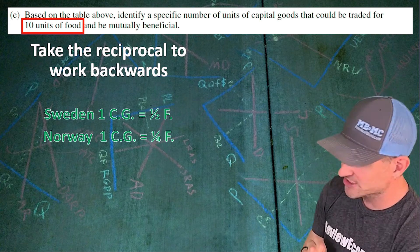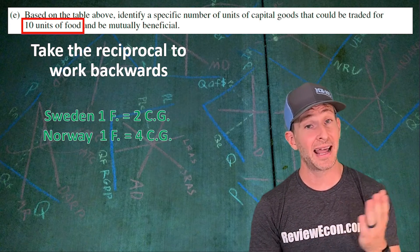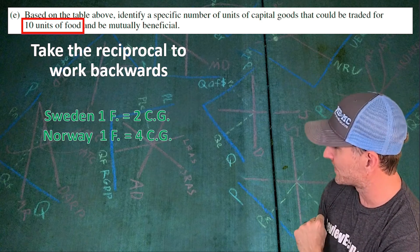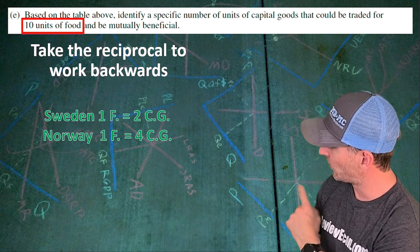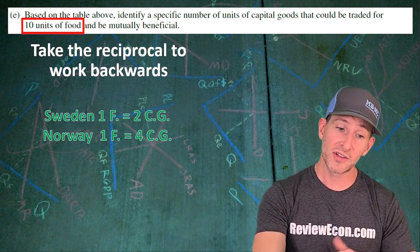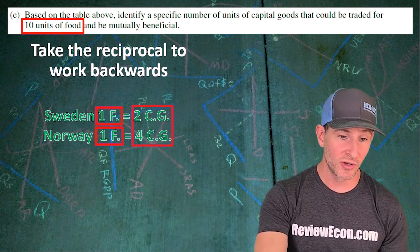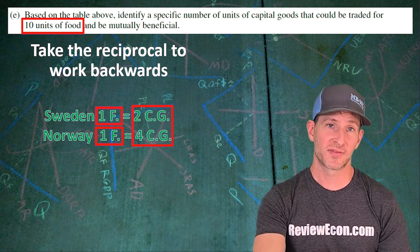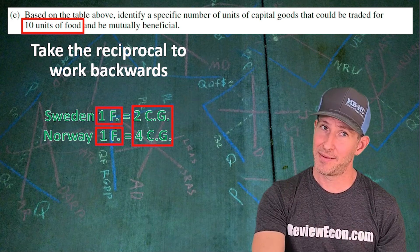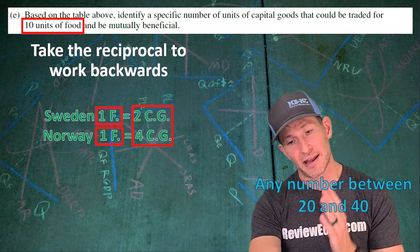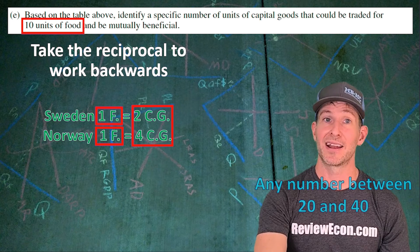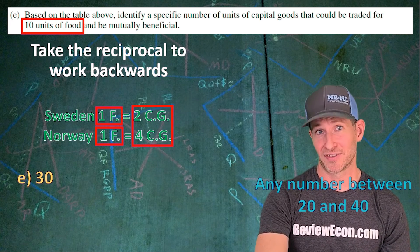Taking the reciprocal means we flip those fractions: one unit of food is now worth two capital goods for Sweden, and four capital goods for Norway. So the mutually beneficial terms of trade will be one unit of food being worth between two and four units of capital goods. Since we're looking at 10 units of food, we multiply both numbers by 10, giving us any number between 20 and 40 units of capital goods for 10 units of food. Simply identify any number in between — let's say 30 — and you've got your point.